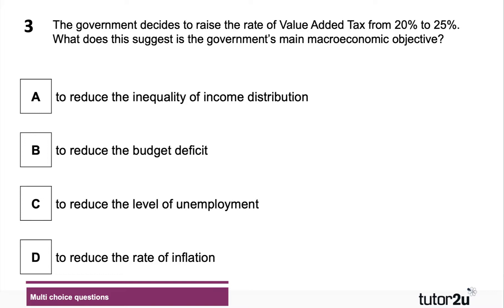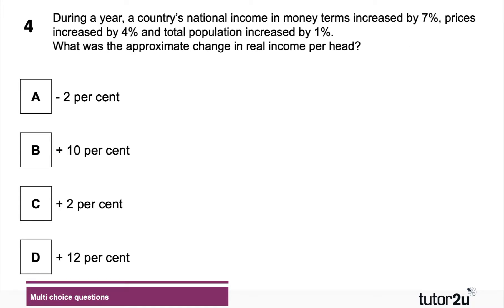Question three: the government decides to raise the rate of value added tax from 20% to 25%. What does this suggest is the government's main macroeconomic objective? It looks like a revenue-increasing measure designed to reduce the budget deficit. VAT can be seen as a regressive tax, making income distribution more unequal. VAT going up would reduce demand, causing higher unemployment, and at least temporarily it would increase prices, so it would increase inflation.